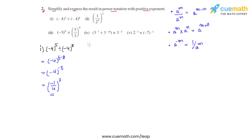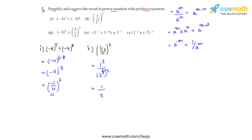The second bit is 1 over 2 raised to 3, whole raised to 2. The power gets individually applied to the numerator and denominator, giving us 1 raised to 2 divided by 2 raised to 3, whole raised to 2. Since we have 2 raised to 3 raised to another power of 2, the powers get multiplied, giving us 1 over 2 raised to 6, or 1 over 2, whole raised to 6.